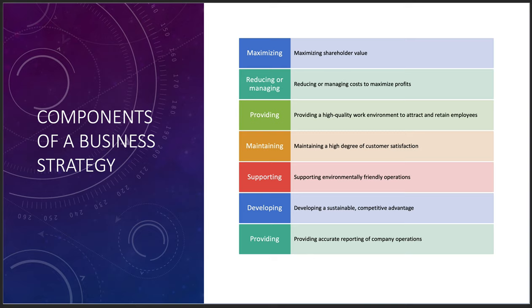Components of a business strategy: the big focus right now is on shareholder value, whereas 40 years ago the focus was more on making sure the company had money for research and development. Right now the component of a business strategy is maximizing shareholder value, but that's starting to shift back to where we were in the 50s and 60s, with more original research and an increase in unionization. Reducing or managing costs to maximize profits is always a given — we always need to make money. We also need to provide a high-quality work environment to attract and retain employees.